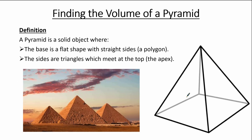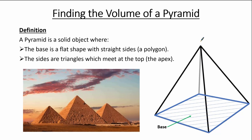We will now look at this object and check whether the definition of a pyramid applies. The base is a four-sided shape, so it can be a square or a rectangle. The sides are made up of four triangles, and they all meet at the top, so this is the apex. Therefore this object fits the definition of a pyramid.